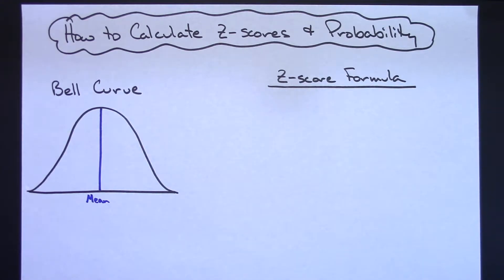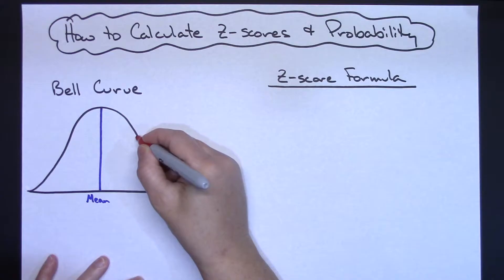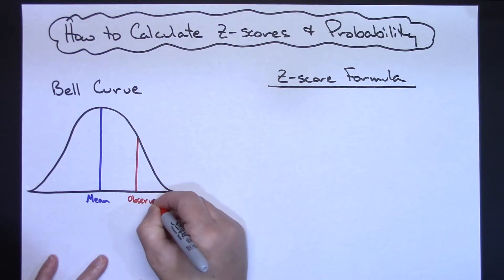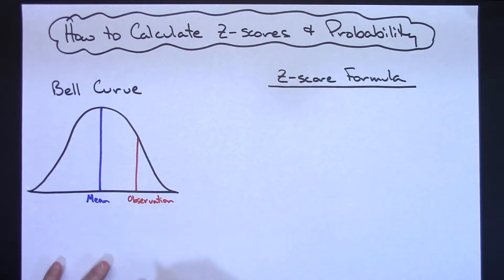Now, we're going to be referring to, let's just call it an observation. An observation is going to occur somewhere along this curve. So let's say we have an observation that occurs right there. So I'm going to label that observation.